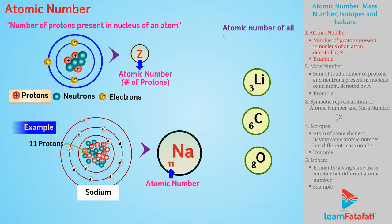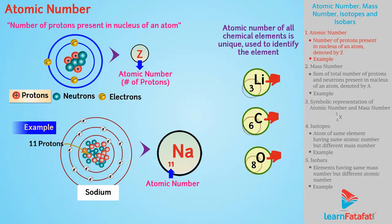Atomic number of all chemical elements is unique which is used to identify that element. For example, only sodium will have atomic number 11 and hence atomic number 11 defines sodium element.